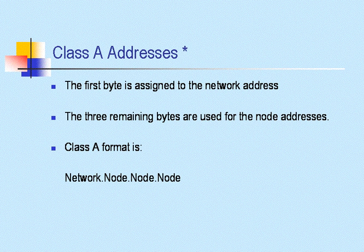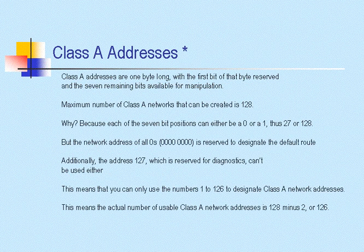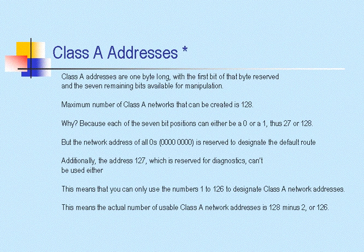Here's some more information about Class A addressing. The first byte is assigned to the network address, and the three remaining bytes are used for the node address — as we saw in the last video. So a Class A format is: network, node, node, node. Now we're going to see how we came up with the possibility for all of those host IPs in a Class A.